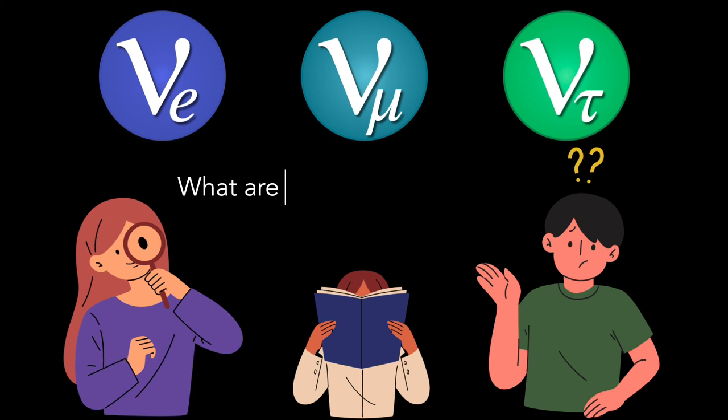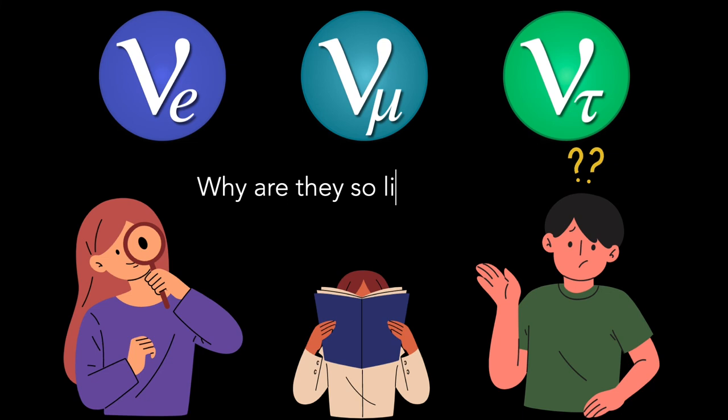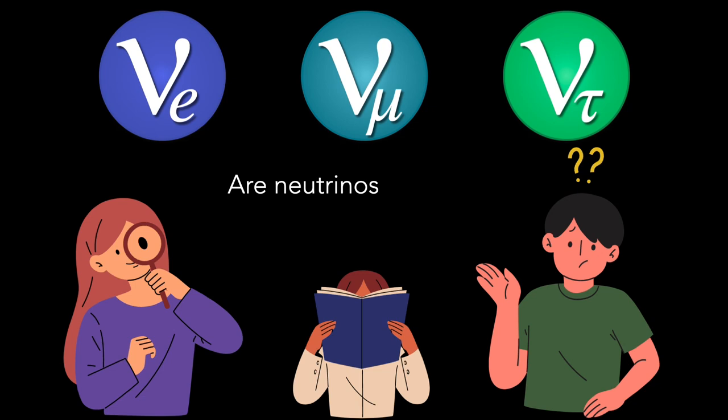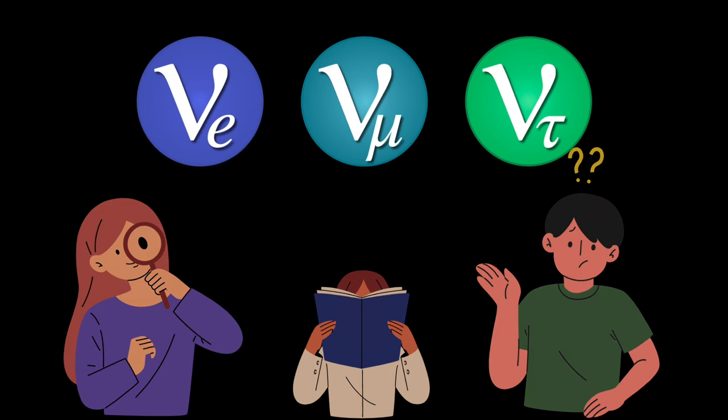What are the neutrino masses? Why are they so lightweight? Are there more types of neutrinos than we currently know? Are the neutrinos their own antiparticles? Why are they so different from other elementary particles?